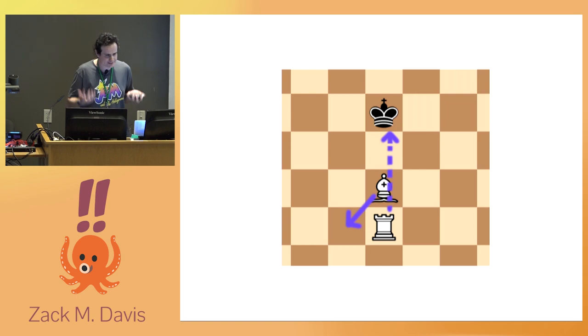And so when observing the chess engine's behavior, wondering why did it do that, it's really tempting to interpret it in psychological terms and say, oh, well, it's trying to set up that fork. It's trying to set up a discovered attack. It wants to do these things.